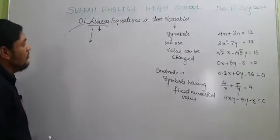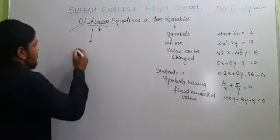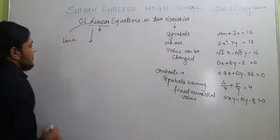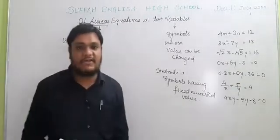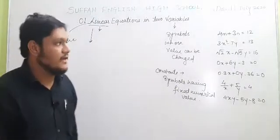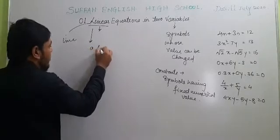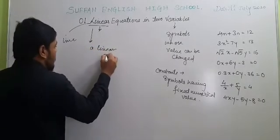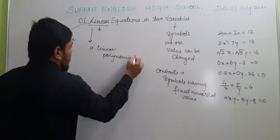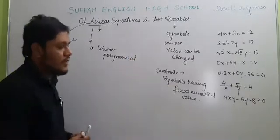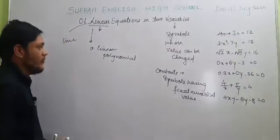Now, the linear equation in 2 variables — the word 'linear' denotes a line. When we draw the graph of a linear equation, it forms a straight line. Also, 'linear' refers to a linear polynomial. In 9th standard, we studied that a polynomial having degree 1 is called a linear polynomial.